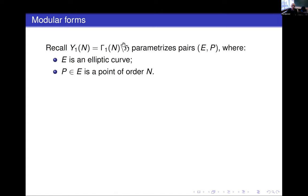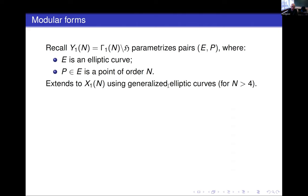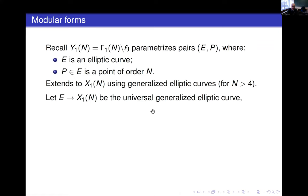Remember the modular curve Y_1(N): the open modular curve, the quotient of the upper half plane by Γ_1(N). It's a moduli space. It parametrizes pairs; its points correspond to isomorphism classes of pairs (E, P), where E is an elliptic curve and P is a point of order N. Its complex points are in bijection with the set of isomorphism classes of such pairs. You can extend this notion to describe the compactification X_1(N) as well, using the notion of generalized elliptic curves.